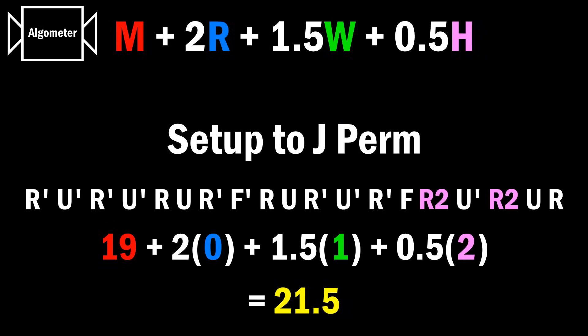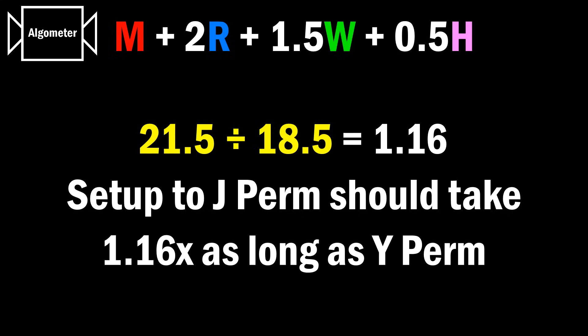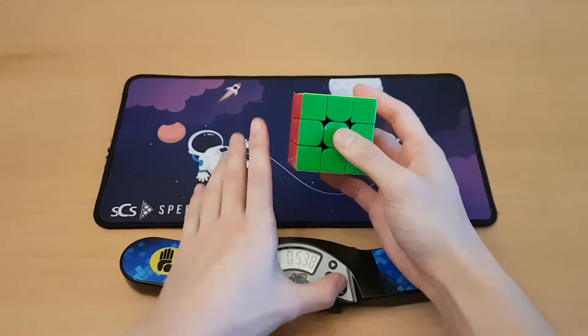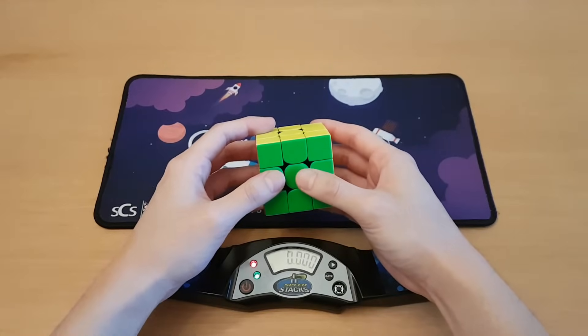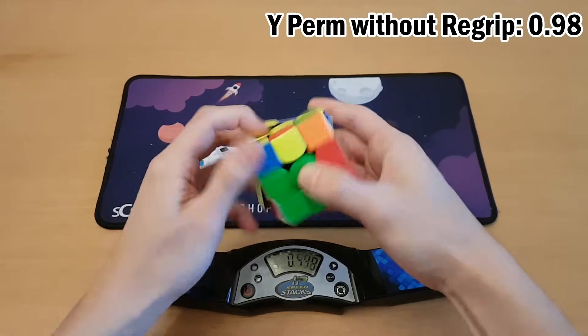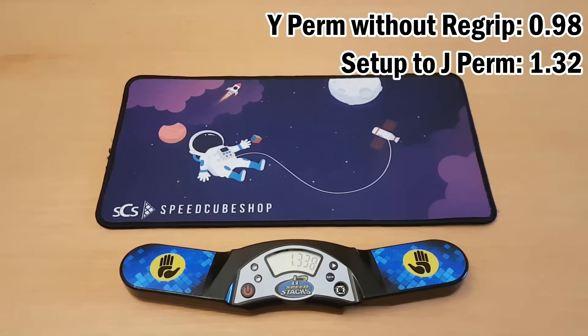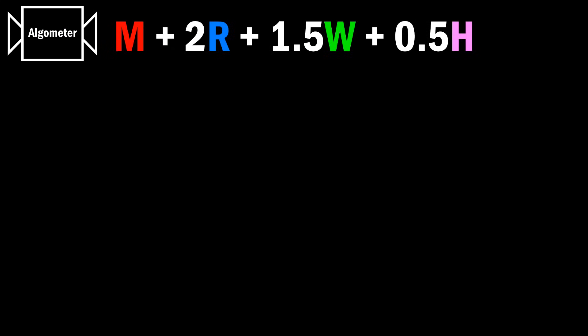We have the standard Y-perm versus the setup into J-perm that I talked about earlier. And again, if you divide these numbers, you get that the setup to J-perm should take about 16% longer. Now for me, it took 30% longer, and this could be because of a few reasons. If we assume the formula is correct, then it could be because I'm so much better at Y-perm than the setup to J-perm. But if we assume that I'm equally good at both algorithms, then what that really means is my formula is not perfect.